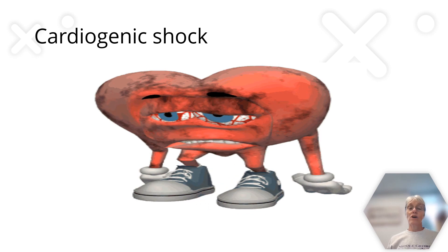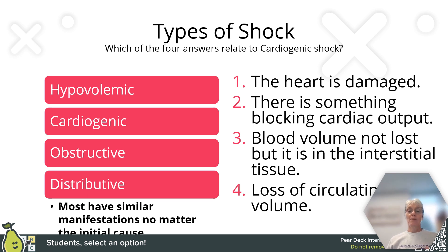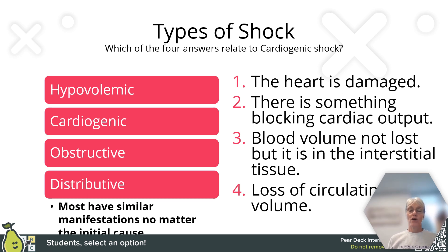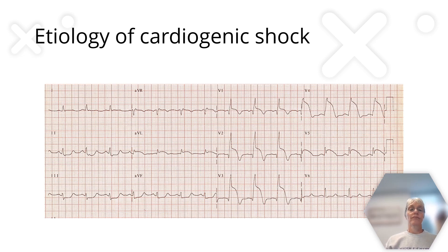When thinking about what causes a sick heart, the number one cause of cardiogenic shock is an MI. Any condition that causes the heart's inability to pump adequately — such as cardiomyopathy or cardiac arrest — would also be a type of cardiogenic shock.